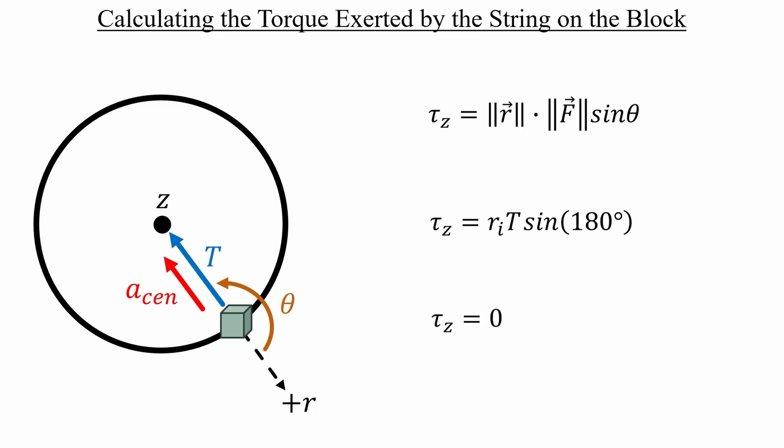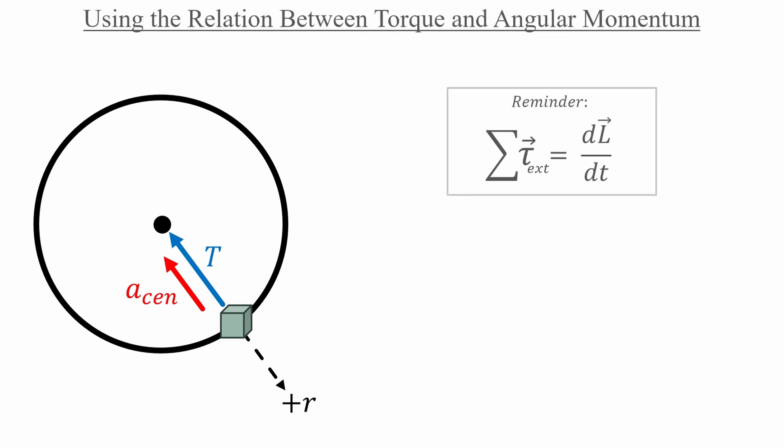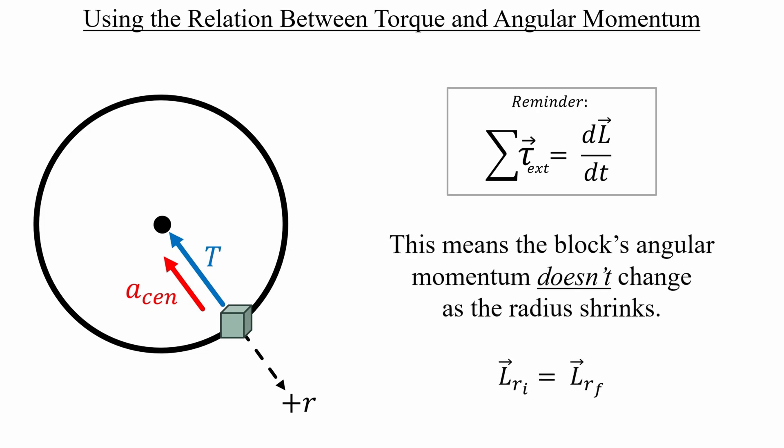And the sine of that angle will cause the torque expression to go to zero. That's a pretty special result. And the reason is that there's a strong connection between torque and angular momentum. This reminder tells us that the sum of external torques on an object is equal to the change in the object's angular momentum through time. So if there's only one external force involved, and the torque it exerts is zero, then the block's angular momentum never changes. That just might be the second equation that we're looking for.